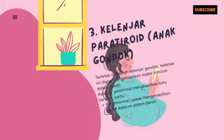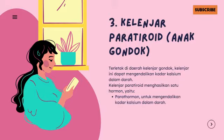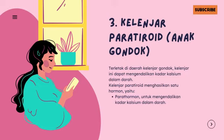Kelenjar paratiroid atau anak gondok terletak di daerah kelenjar gondok. Kelenjar ini dapat mengendalikan kadar kalsium darah. Kelenjar paratiroid menghasilkan satu hormon yaitu parathormon.